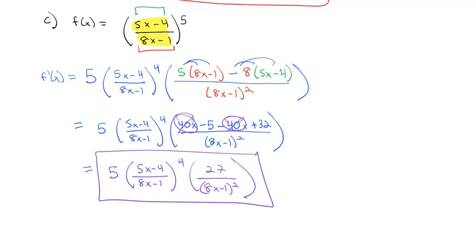So that is our chain rule: we take the derivative of the outside times the derivative of the inside. Along the way, we might need to use some product and quotient rule as well. This is a great review of all the derivative properties we've seen so far. Take a look at practicing these on the homework assignment, come to class with questions, and we'll discuss them further and do a few applications.